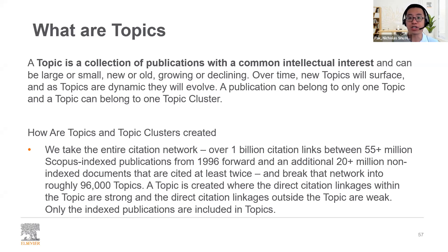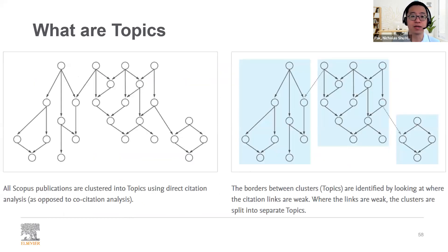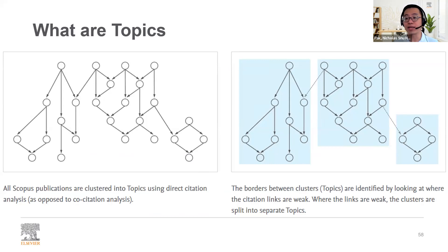Topics and topic clusters are created by taking the entire citation network with over 1 billion citation links between 55 million Scopus-indexed publications from 1996 onwards, plus an additional 20 million non-indexed documents cited at least twice, making approximately 100,000 topics. A topic is created where the direct citation linkage within the topic is strong and the direct citation linkage outside the topic is weak. All publications in Scopus are clustered into topics using direct citation analysis — the borders between clusters are identified by looking at where the citation links are weak, and when links are weak the clusters are split into separate topics.